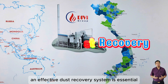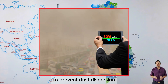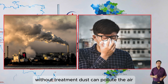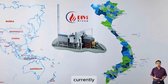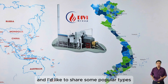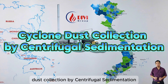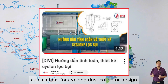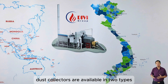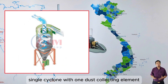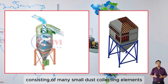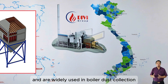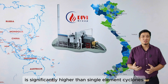Issue 2: Dust Recovery. An effective dust recovery system is essential to prevent dust dispersion into the environment. This system collects all the dust generated during fuel combustion. Without treatment, dust can pollute the air, harming the environment and human health. Currently, there are many types of dust recovery systems. Cyclone dust collection by centrifugal sedimentation is available in two types: single cyclones with one dust collecting element, and multi-cyclones consisting of many small dust collecting elements. Multi-cyclones are much more efficient than single cyclones and are widely used in boiler dust collection, though their manufacturing cost is significantly higher. Cyclones are only effective for recovering dust particles larger than 10 microns.